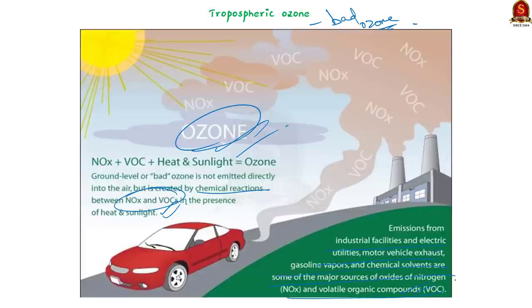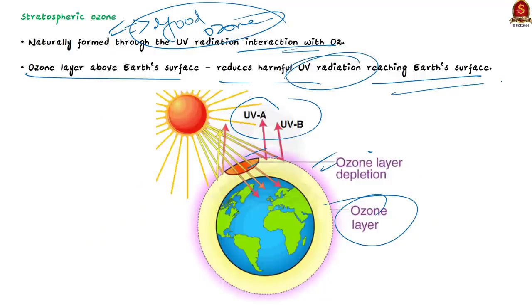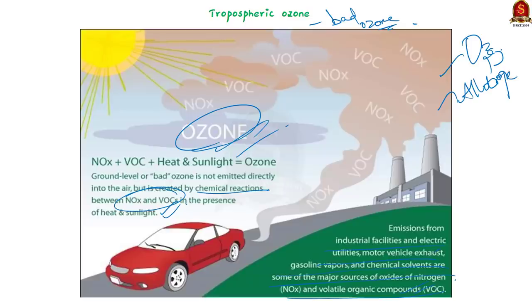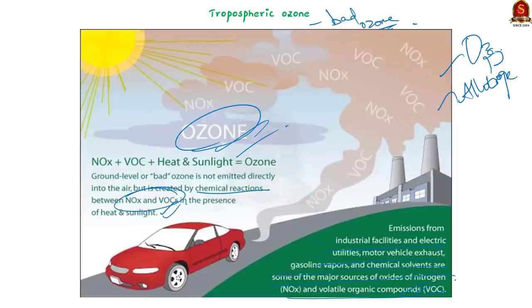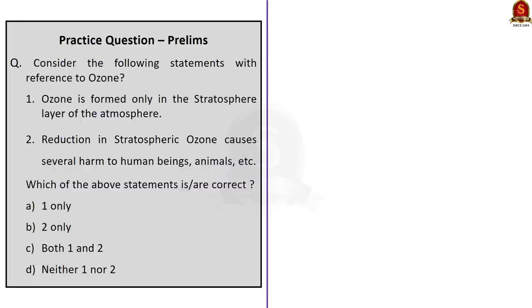So that's all regarding ozone. We saw that ozone is a triatomic allotrope of oxygen — a form of oxygen in which a molecule contains three atoms instead of two. We saw about stratospheric ozone, formed naturally through the interaction of solar ultraviolet radiation with molecular oxygen, which forms the ozone layer that reduces harmful UV radiation reaching the surface. And we saw about tropospheric ground-level ozone, created by chemical reactions between oxides of nitrogen and volatile organic compounds.